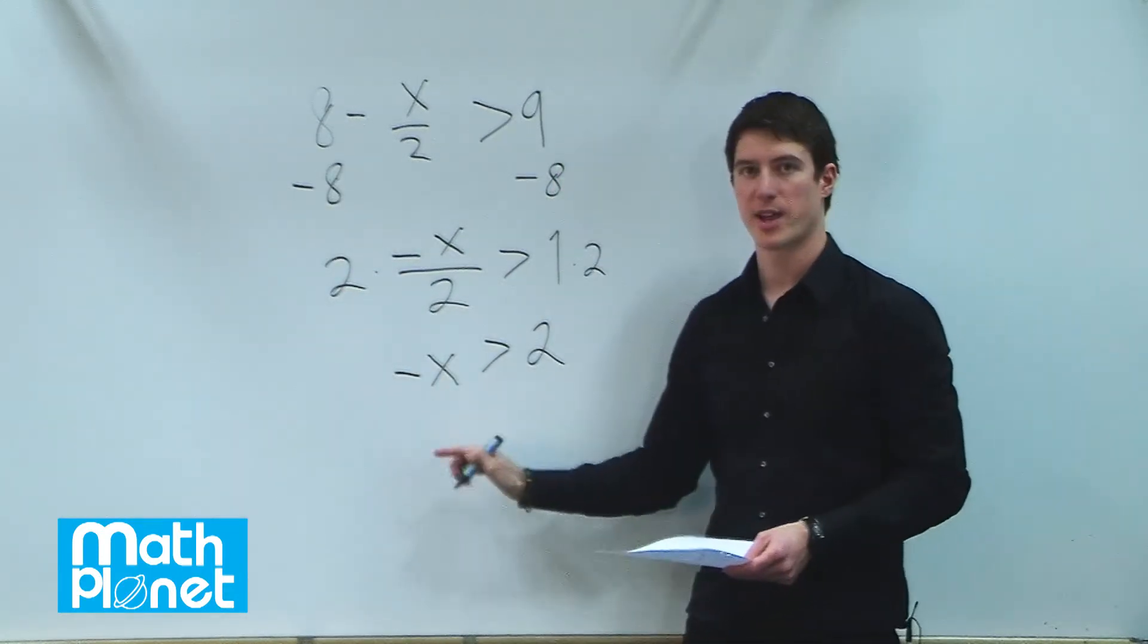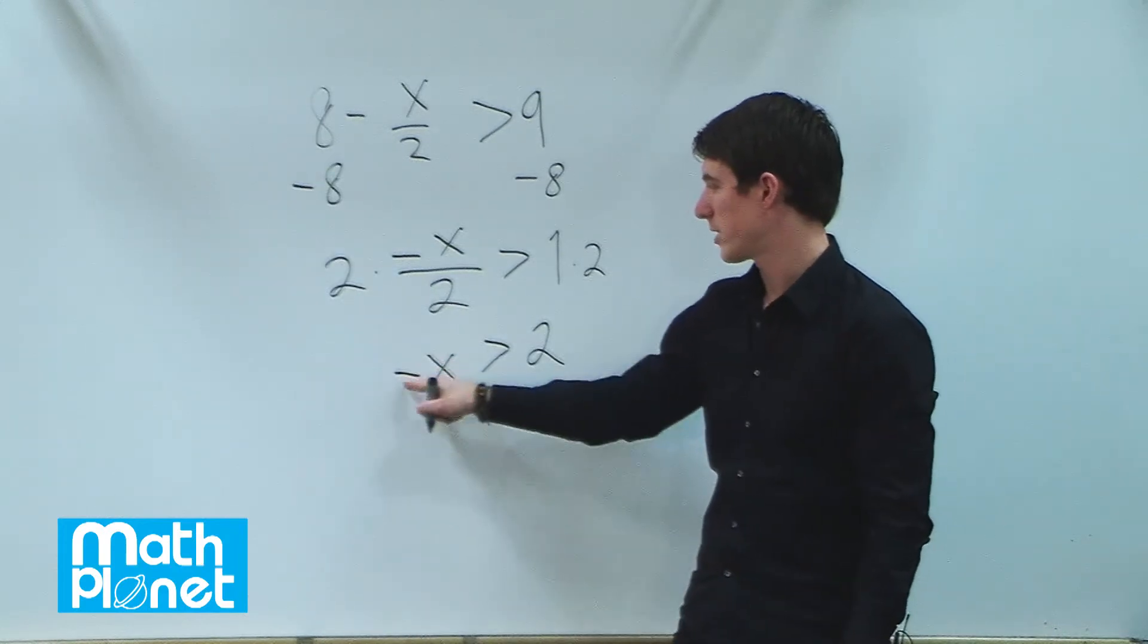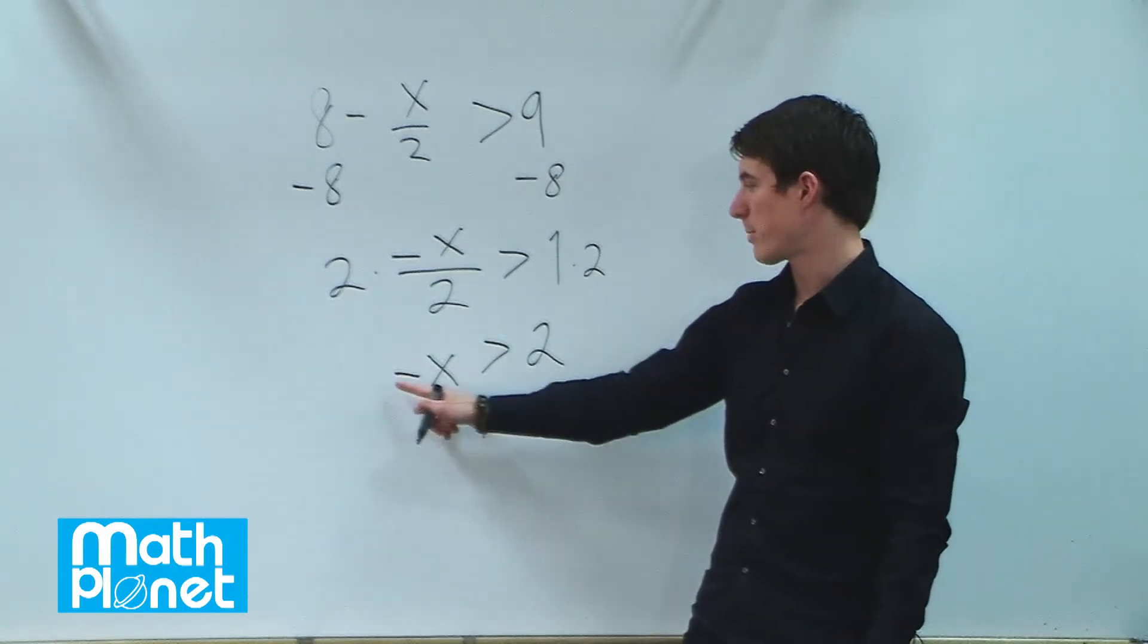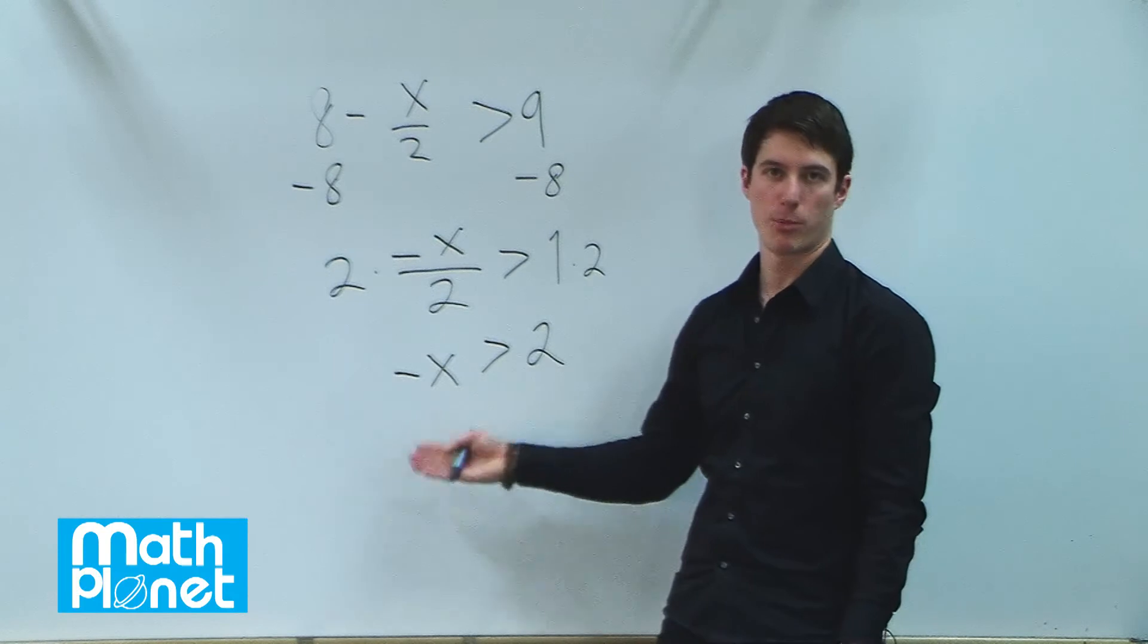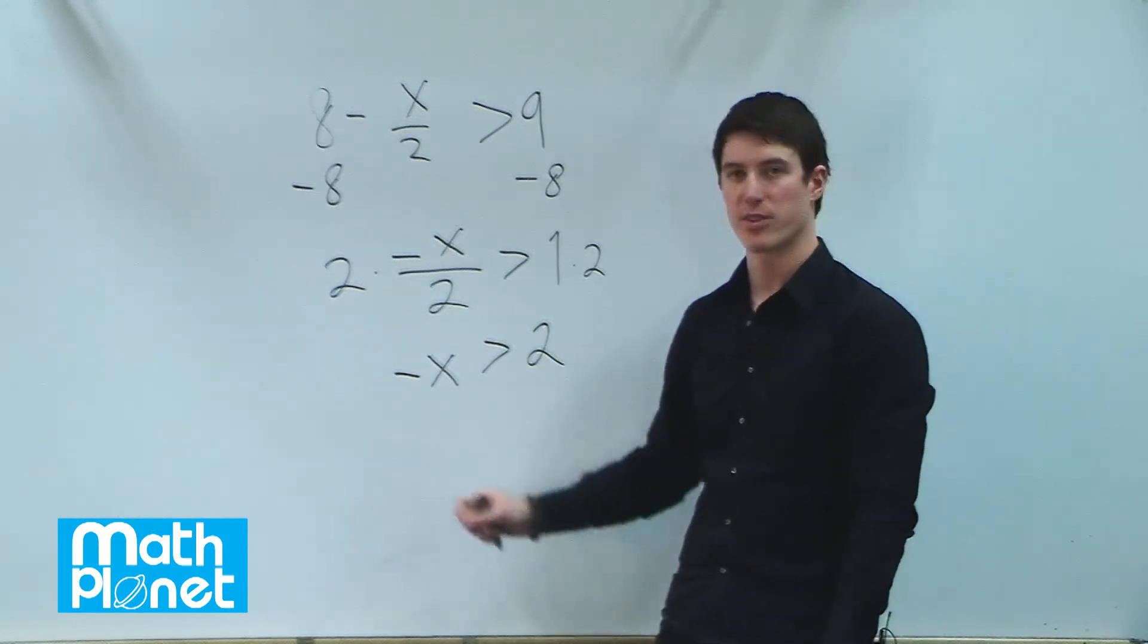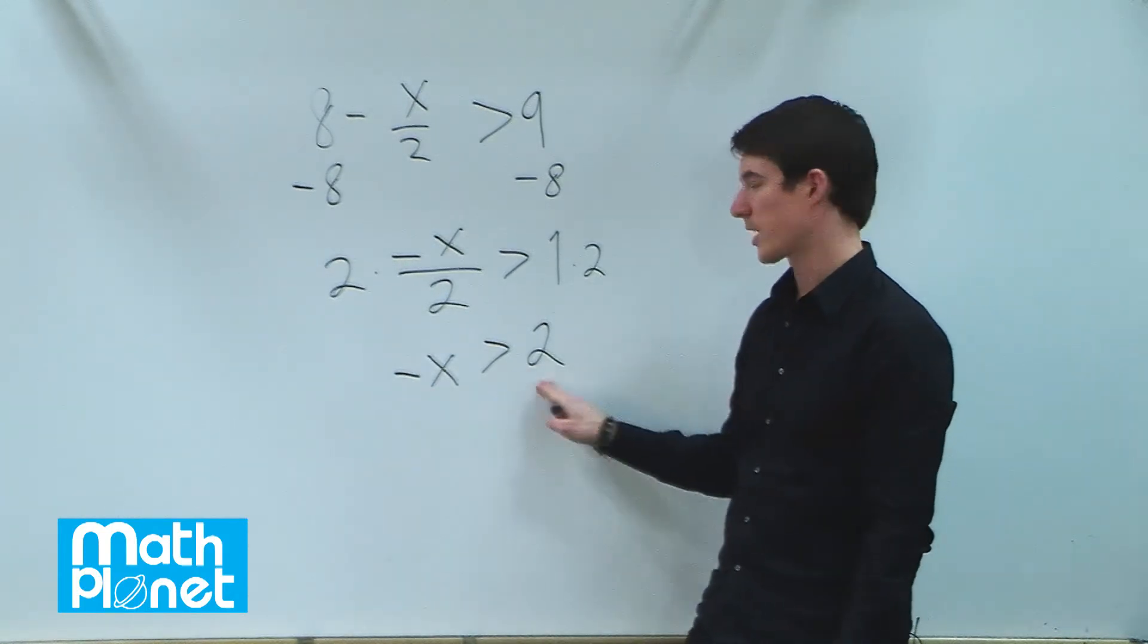Now we want to have this say x all by itself, so we need to get rid of this negative here. You can get rid of this by dividing by negative 1 or multiplying by negative 1. In this case it's the same thing. Either way we need to get this negative to the other side.